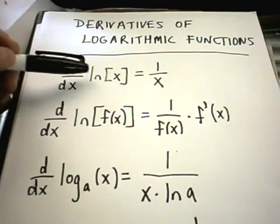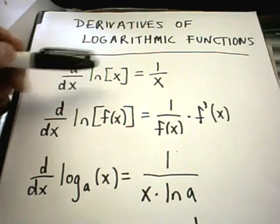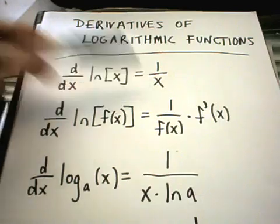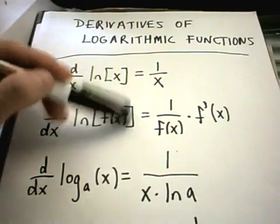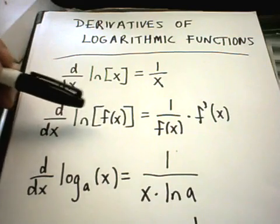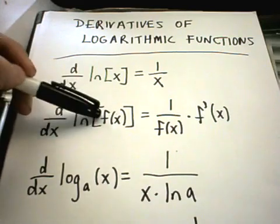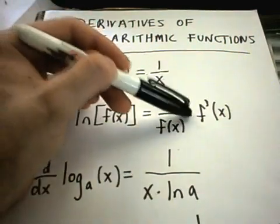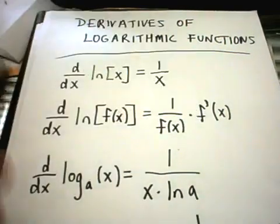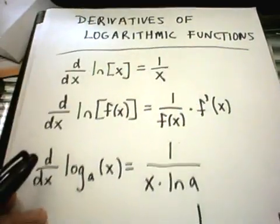The basic formula says if you have just plain old ln of x, the derivative of that is just 1 over x. The derivative, if you have something more complicated inside, says the derivative of ln of something more complicated, you get 1 over the complicated stuff, and then you have to multiply by the derivative of that complicated stuff.